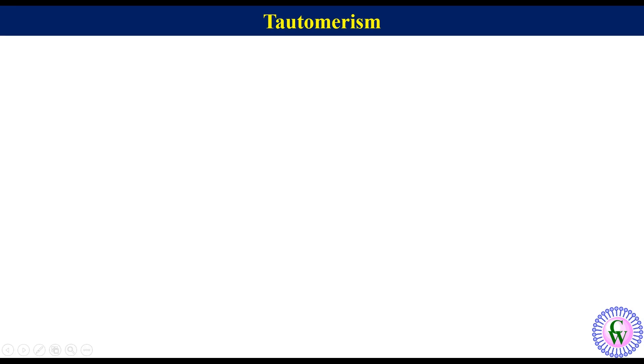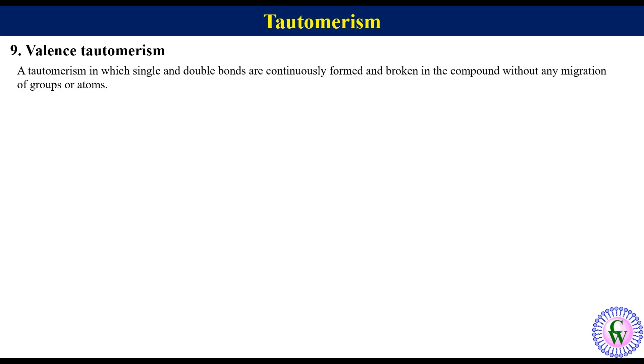The last tautomerism which we are going to discuss is valence tautomerism. By definition, it is different from what we have discussed so far about tautomerism. We have learnt so far that in tautomerism there is movement of proton from one atom to another. But in valence tautomerism, single and double bonds are continuously formed and broken in the compound without any migration of atoms or groups.